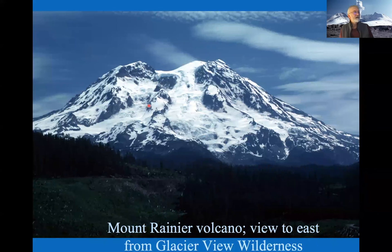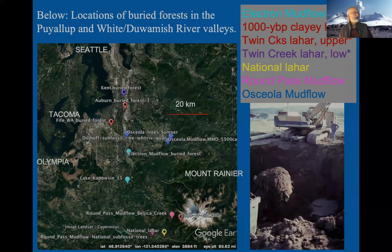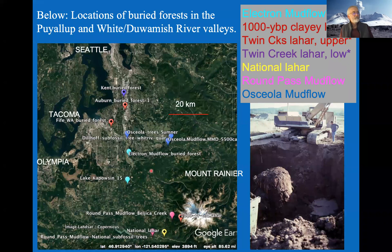Let's jump up to Mount Rainier. The volcano has had a very consequential history on the geography of the Puget Lowland—filling in vast amounts of it. This paleoreconstruction shows Puget Sound 5,700 years ago versus today, and you can see a whole part of the sound has been filled in by material from Mount Rainier.